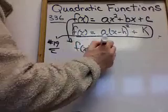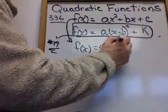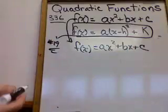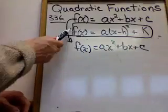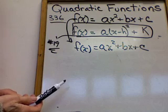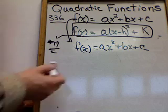f of x equals ax squared plus bx plus c. Now the interesting thing about this, if I wanted to graph it like the first type, I would have to do what's called complete the square. You've done that, and that takes a bit of work.